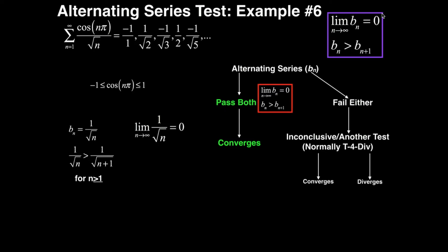Now we need to show that b sub n is decreasing — that is, is b sub n greater than b sub n+1? Is 1 over square root of n greater than 1 over square root of n+1? This is true for every single n in this series starting at 1: 1 over 1 is greater than 1 over √2, 1 over √2 is greater than 1 over √3, and so on. So for every n, b sub n is decreasing.